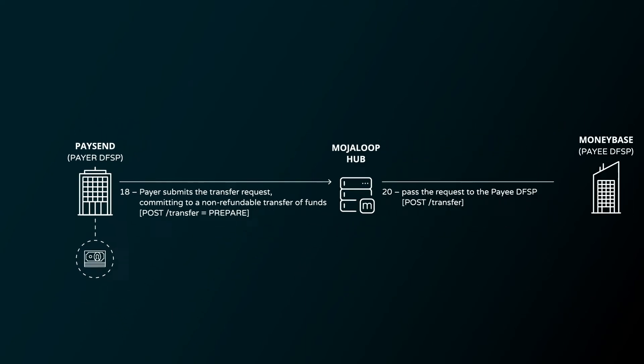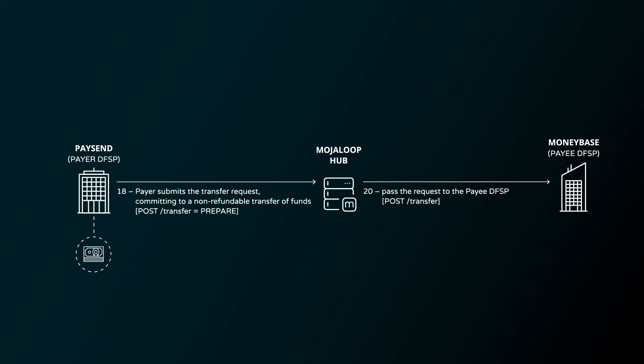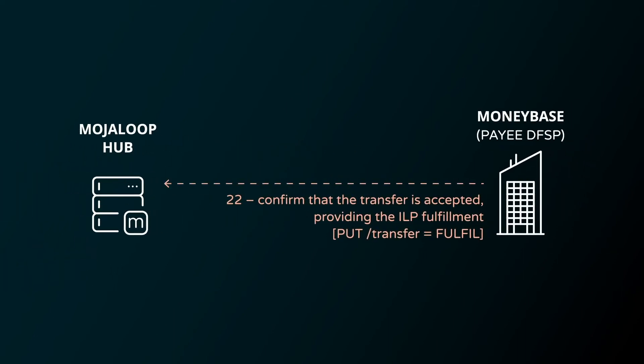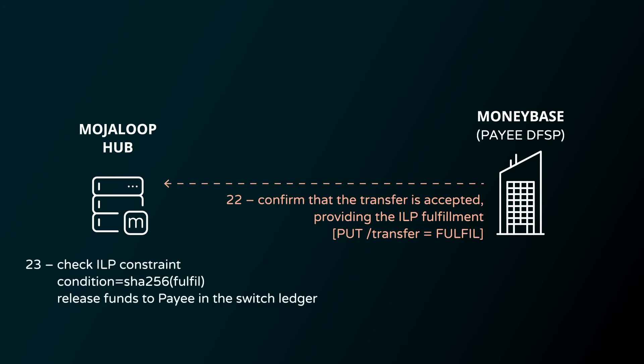Mojaloop passes the transfer post request onto MoneyBase. MoneyBase accepts, which means it confirms the ILP condition and generates the fulfillment, and then authorizes the transaction. MoneyBase sends a response back to Mojaloop, which accepts, confirms the validity through the fulfillment process, and commits the funds against the position for MoneyBase, reflecting an increase in available switching funds. This is the fulfillment stage.